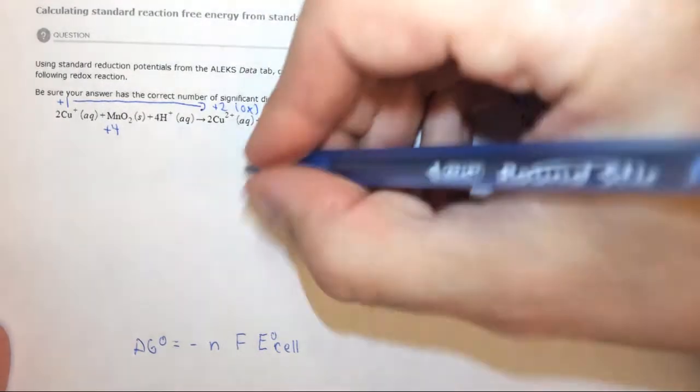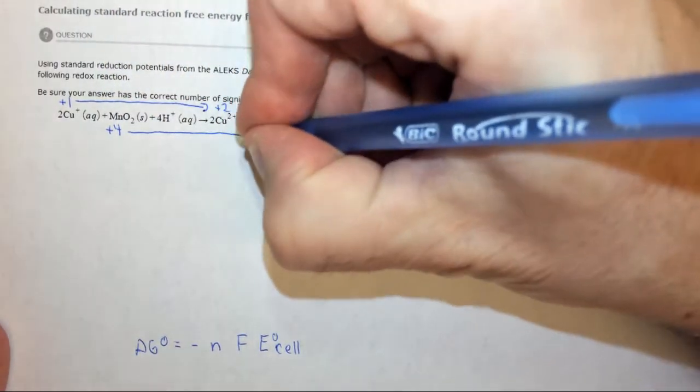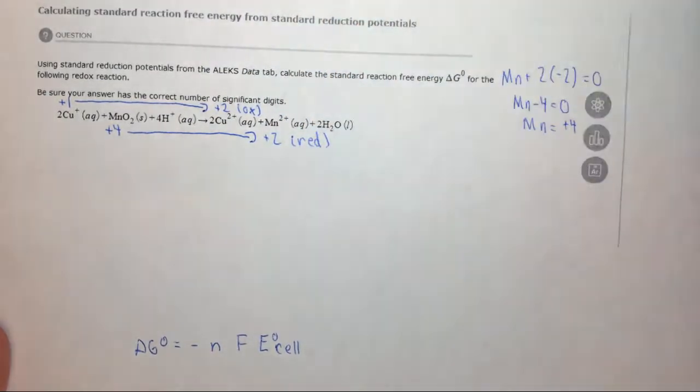So here the oxidation state on manganese is plus 4, and over here it's plus 2, so it's gained electrons, so reduction has occurred.